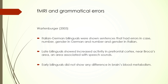fMRI studies on grammatical errors also found very interesting results. One study used German and Italian bilinguals who were shown sentences with errors in case, number, and gender in German, and number and gender in Italian. The findings show that late bilinguals showed increased activity in the prefrontal cortex near Broca's area.